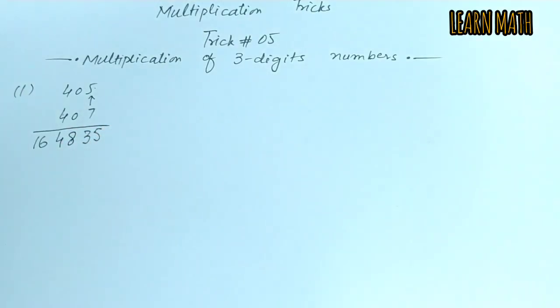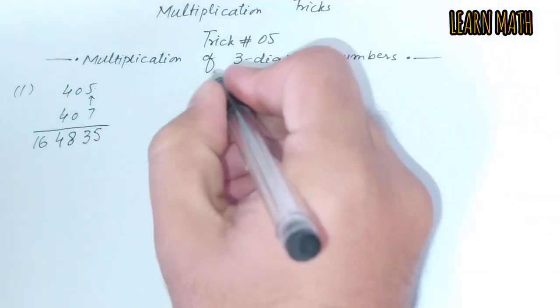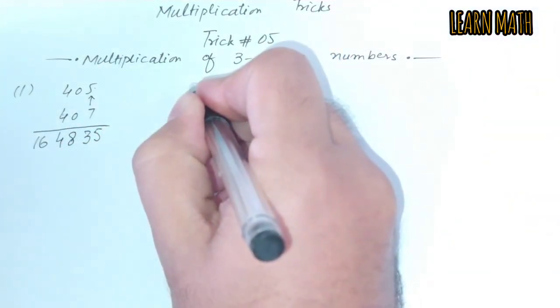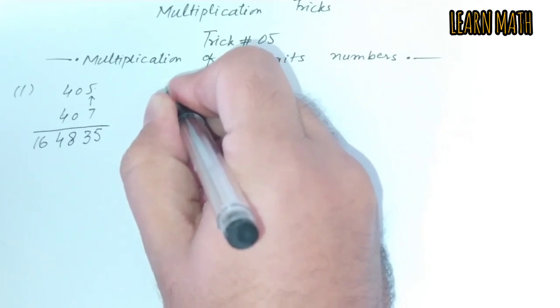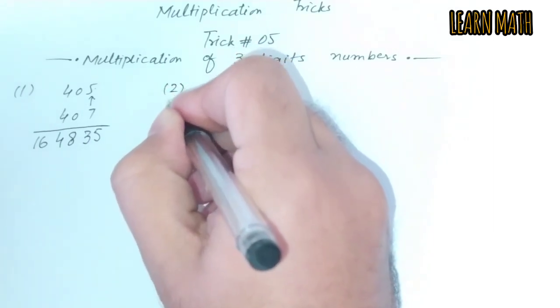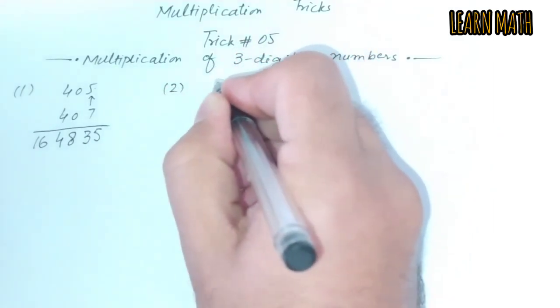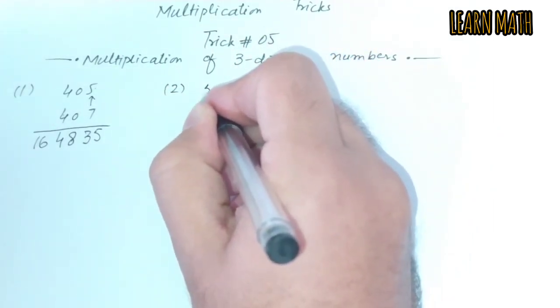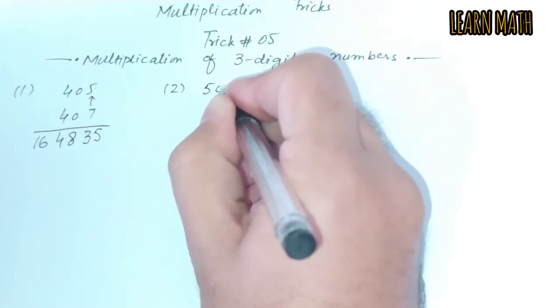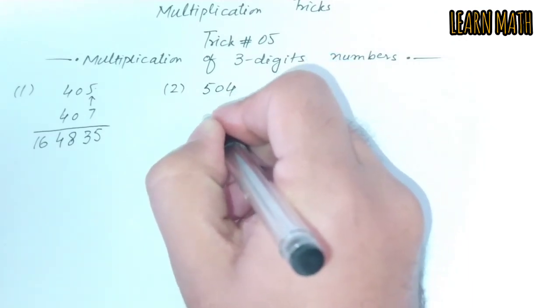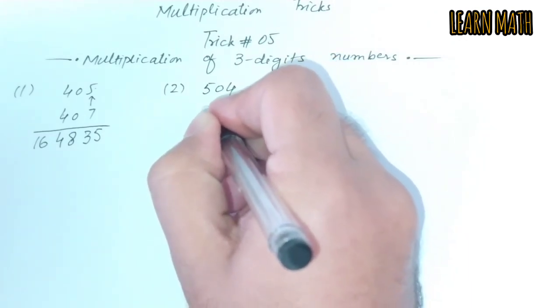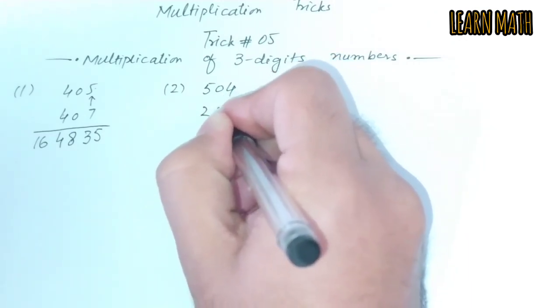And this is the answer for this big multiplication. The second example: if we have two numbers, 504 and 203.